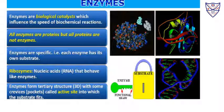In order to carry out all these metabolic reactions, we need something called enzymes. Enzymes are basically biological catalysts — what they do is speed up the reactions. All enzymes are basically proteins, but not all proteins are enzymes. For example, keratin found in our hair is not an enzyme. The other properties of enzymes are that they are very specific: for each enzyme there is a particular substrate, which is the thing on which an enzyme acts.